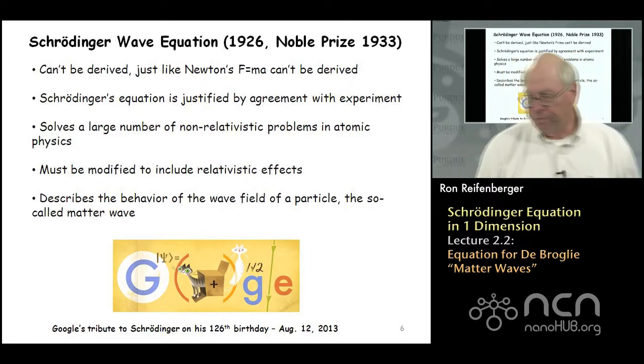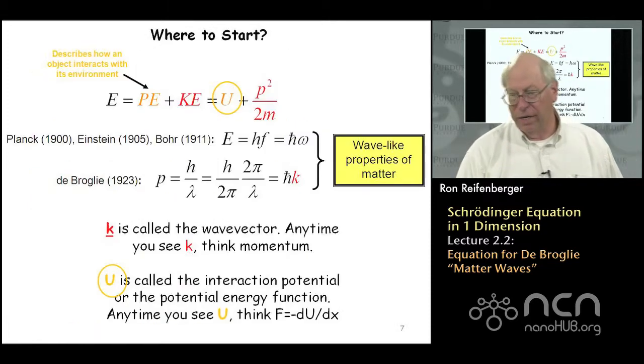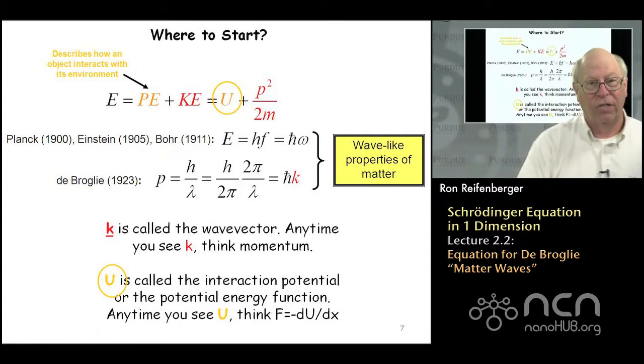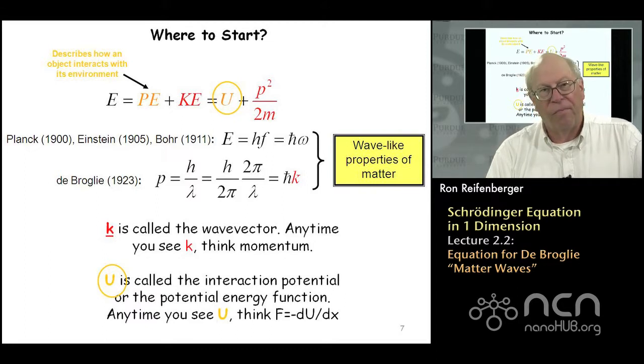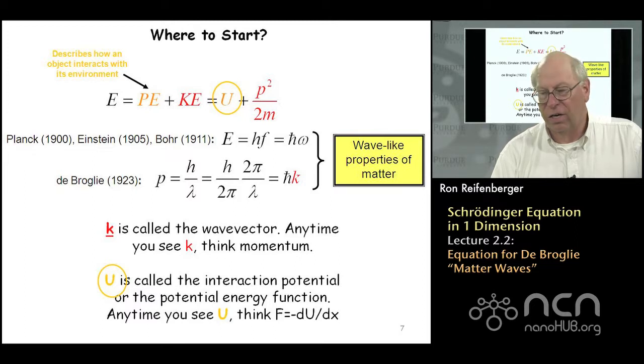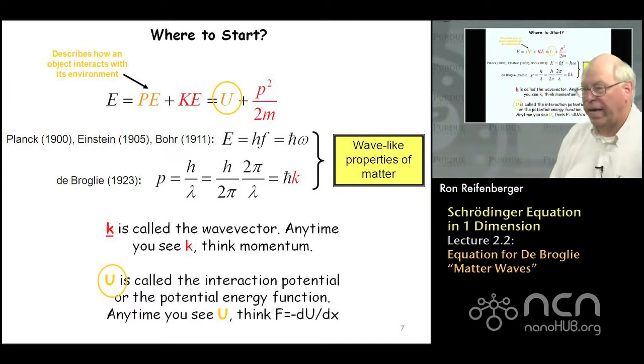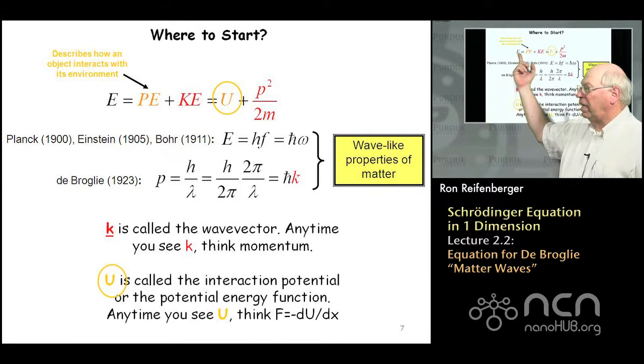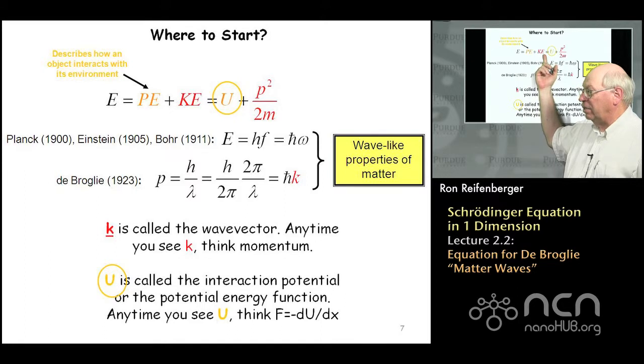So, let's ask the question where to start. And the way we're going to start is we're going to insist that Hamilton's ideas about conservation of energy are going to apply to quantum particles. And that just simply means that if we write the total energy of a particle as E, then it's going to be equal to the sum of a potential energy and a kinetic energy.